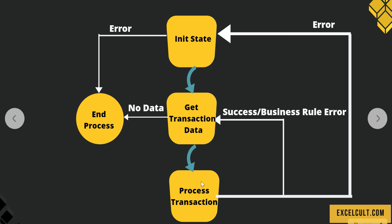What if it's a failure? There can be two types of exceptions: system exception and business rule exception. If it's a system exception — say your system was not working, your application failed to load, or there was a network connection issue — then the flow will be directed towards the Init state. It will check for the availability of those applications, and if it still does not succeed, it will move on to End Process and stop.